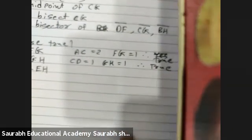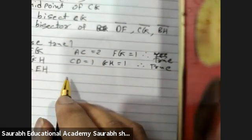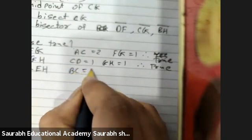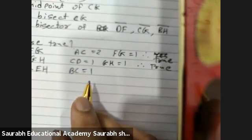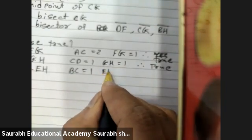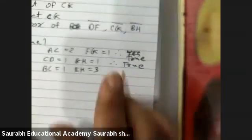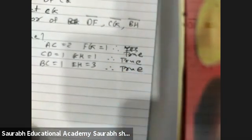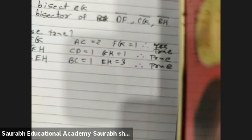Third one: BC is 1 unit and EH is 3 units. So EH is greater, so again this is a true statement.